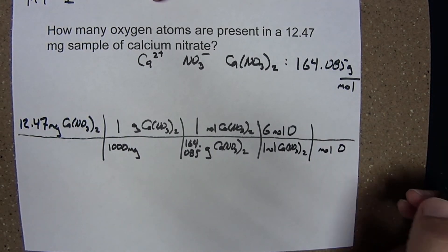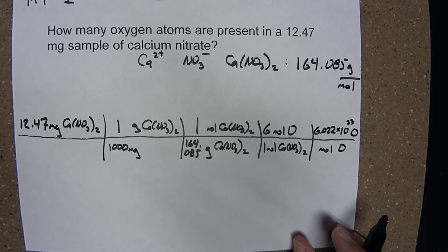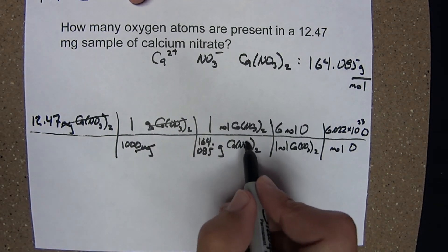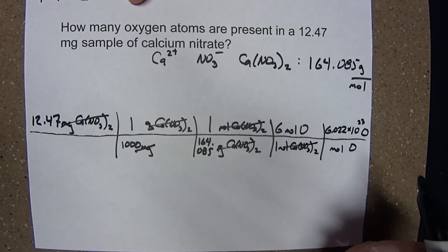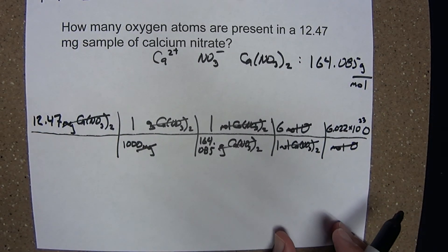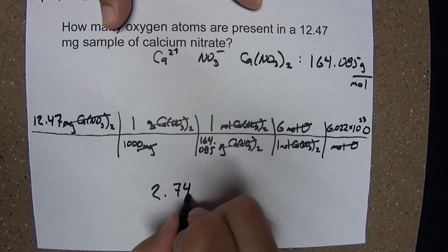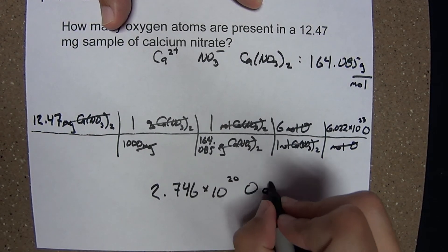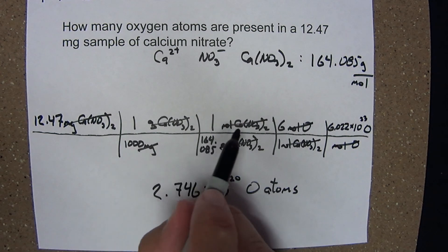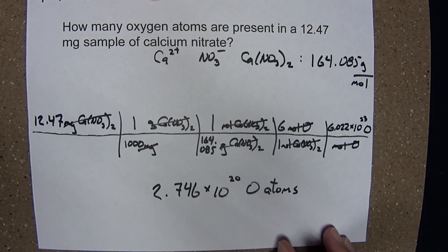And I can always convert from moles of something to number of that something using Avogadro's constant. Recall, it had inverse mole units. So 6.022 times 10 to the 23 O atoms per mole of oxygen. Let's watch what happened to our units here. Milligrams of calcium nitrate canceled milligrams. Grams canceled grams. Mole canceled mole. Moles of oxygen. Moles of oxygen. I'm left with the desired value number of oxygen atoms. I do that prescribed arithmetic. And I get 2.746 times 10 to the 20 O atoms. I started with four significant figures in that mass. I did multiplication and division here with values that had at least four significant figures. So I'm justified in keeping four in my final result.